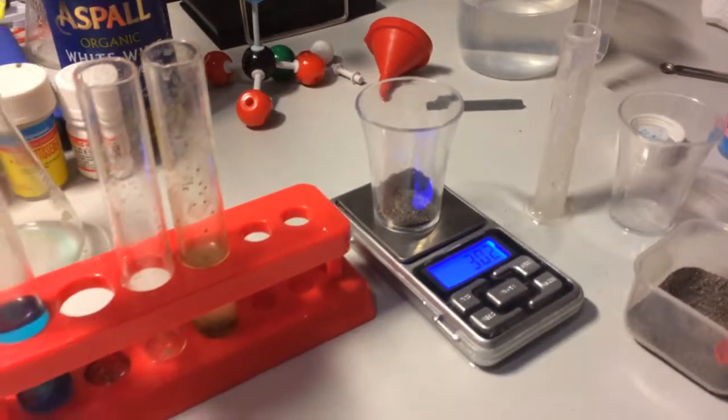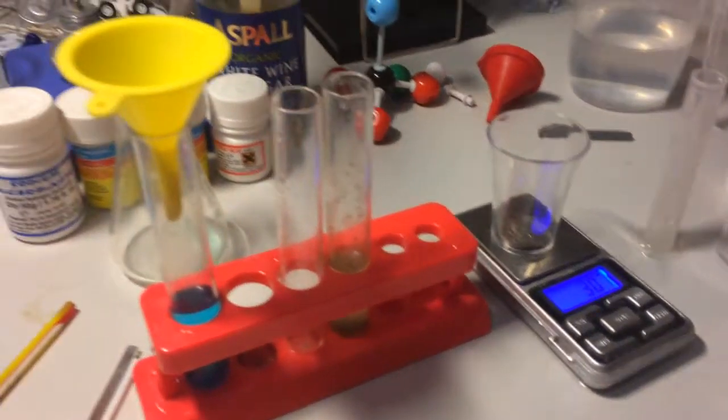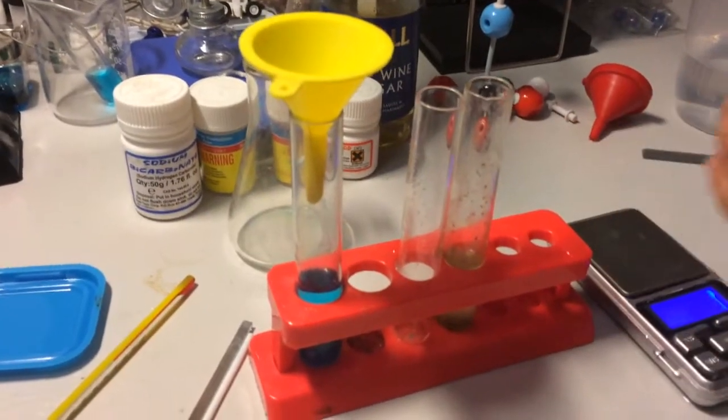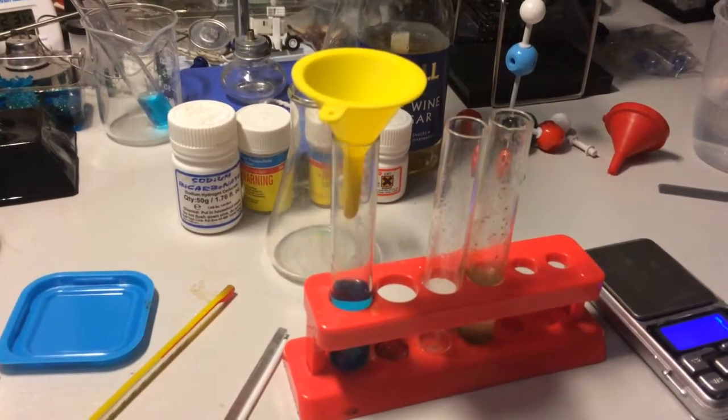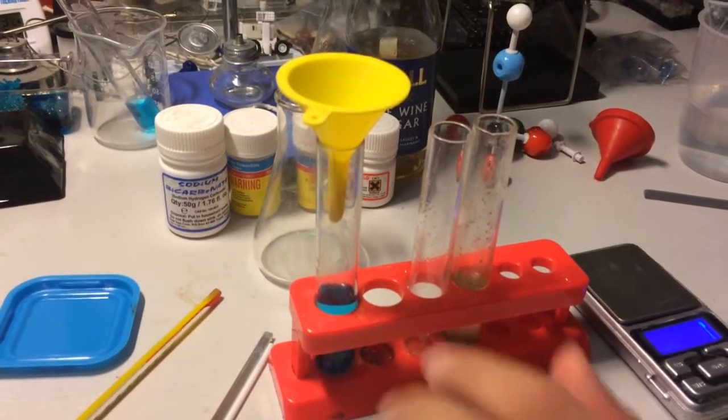Now that we have got approximately 3 grams of iron filings, we can now add it to the copper sulphate solution to see what happens.